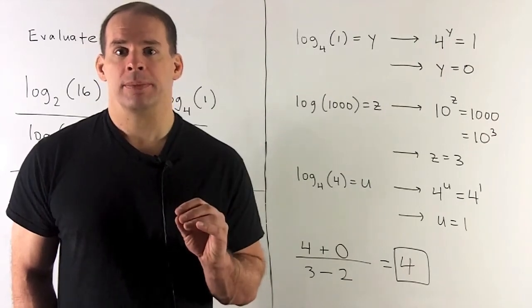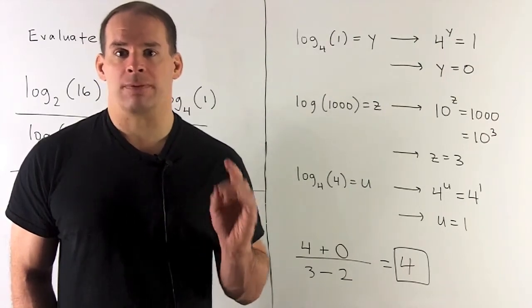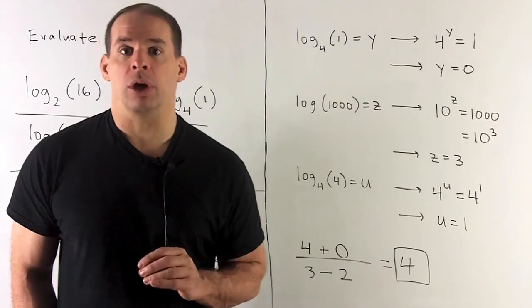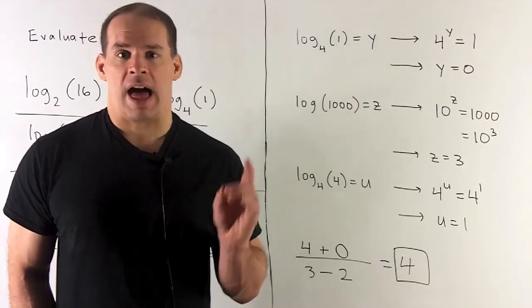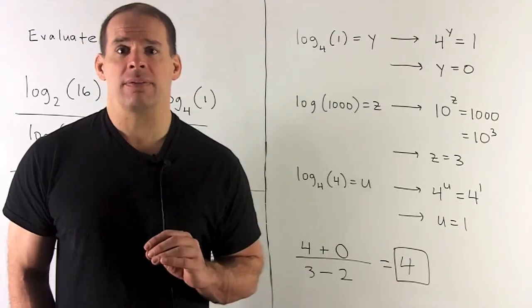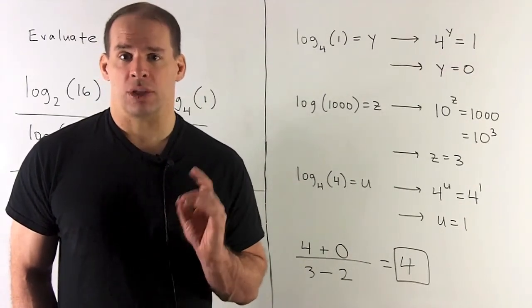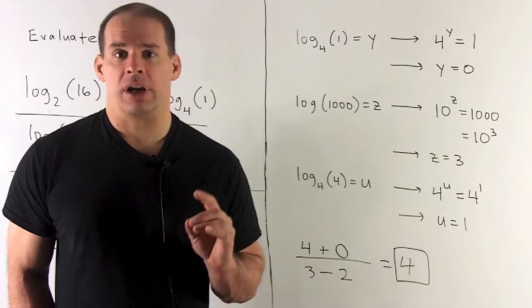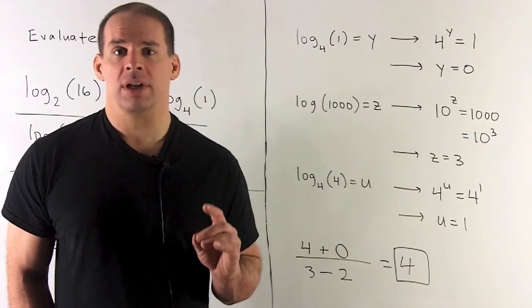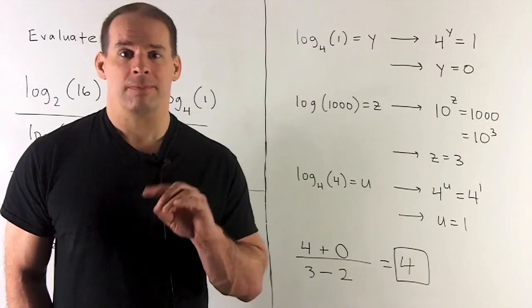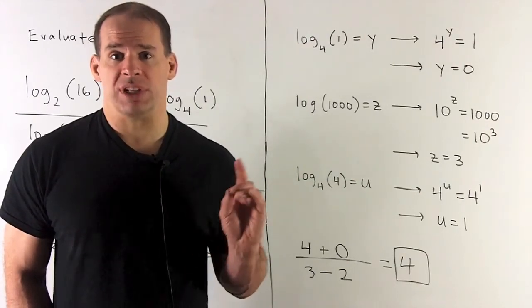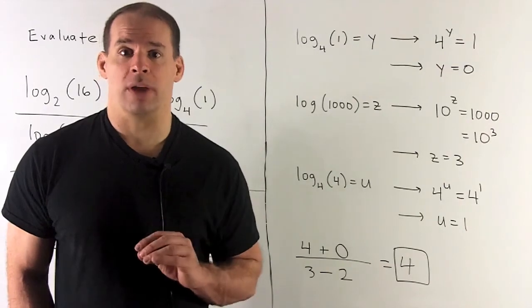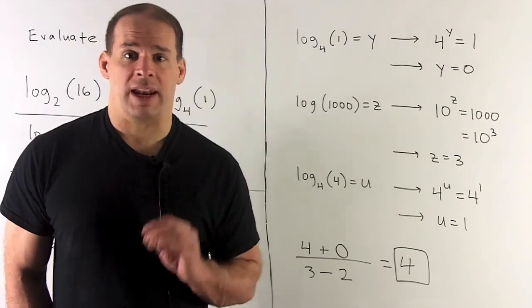Then finally, we'd have log of the base 4, 4. Let that be equal to u. Again, there's an identity that says, if I take log of a base to the base itself, that's going to give me 1. Let's rewrite and see that. So here, I'm going to have 4 to the u is equal to 4. 4 by itself is just 4 to the 1. So we're going to have u is equal to 1. And that agrees with what you would get if you had that identity.